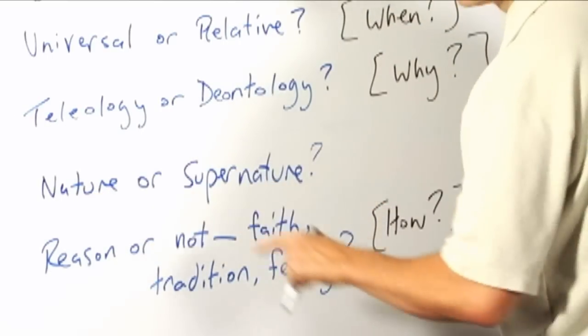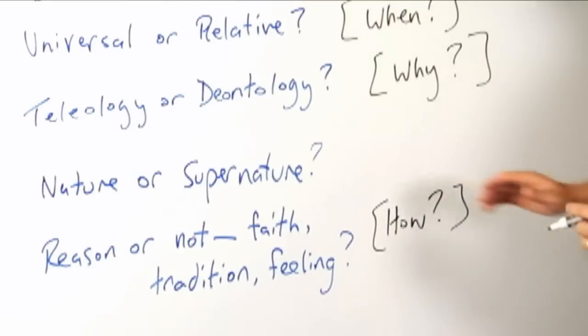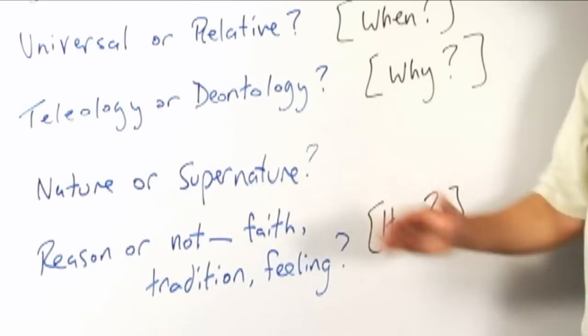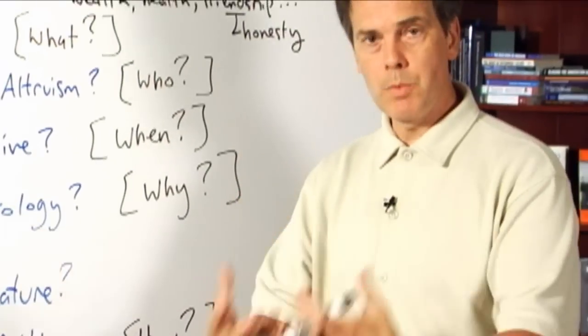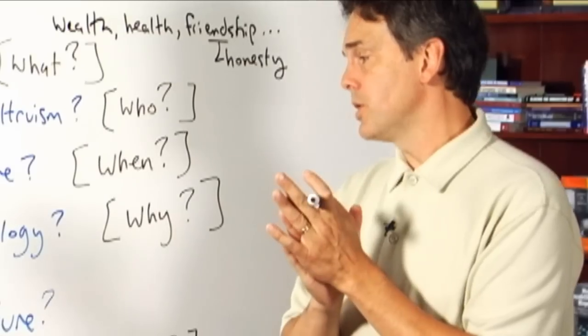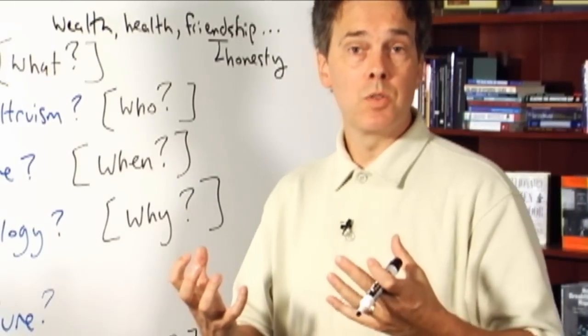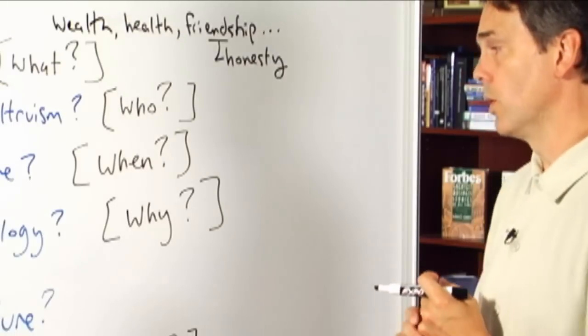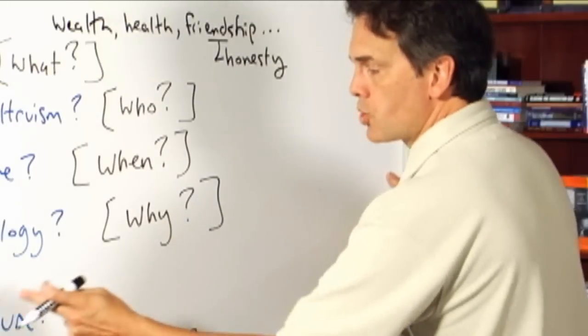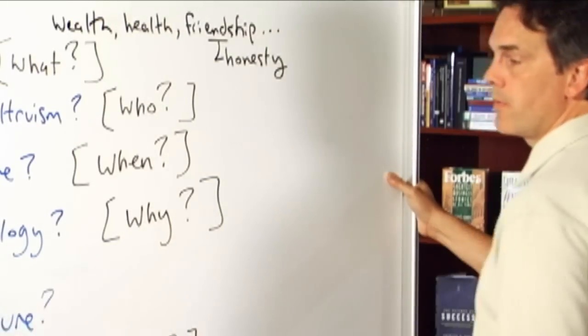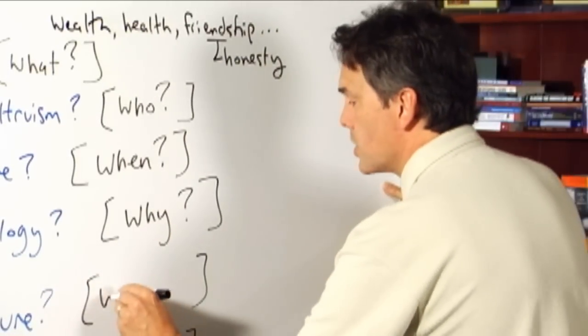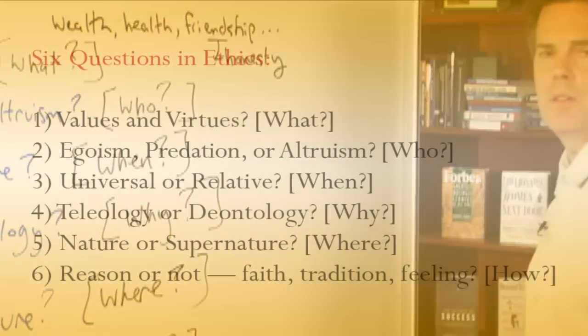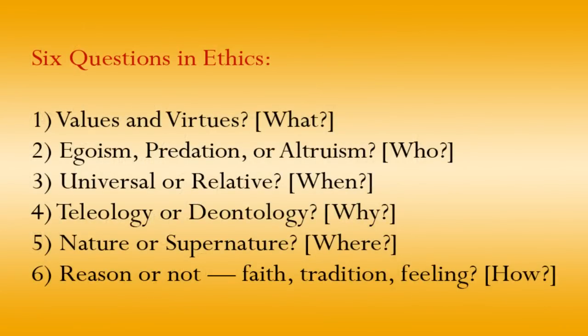Or is it the case that ethics is supernaturalistic in its origin, that it's a matter of God having decided what's right and what's wrong, and God communicates that to us from God's place in the universe, and then we simply accept those principles and apply them as best we can in this particular world. But that their primary source and ultimate scope and application is to be found, not in the natural world, but rather in the supernatural world. And that is the question of where. Where do we find the ultimate source and justification for ethical values and principles?